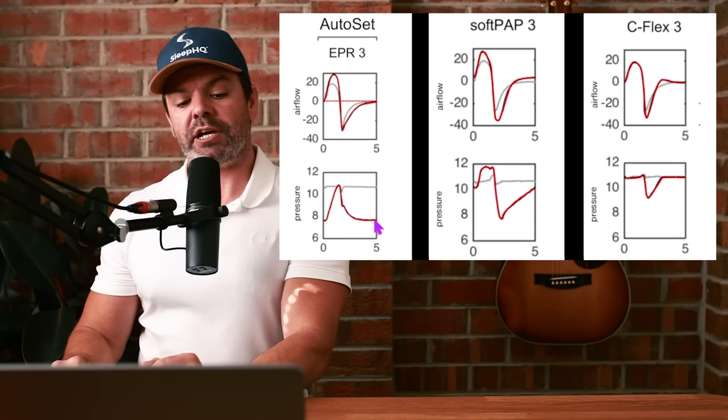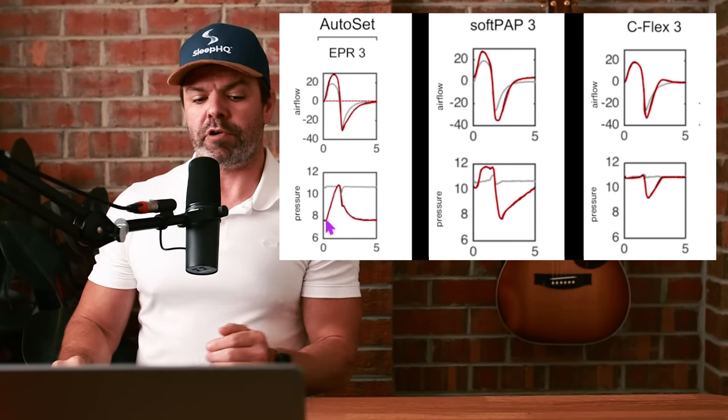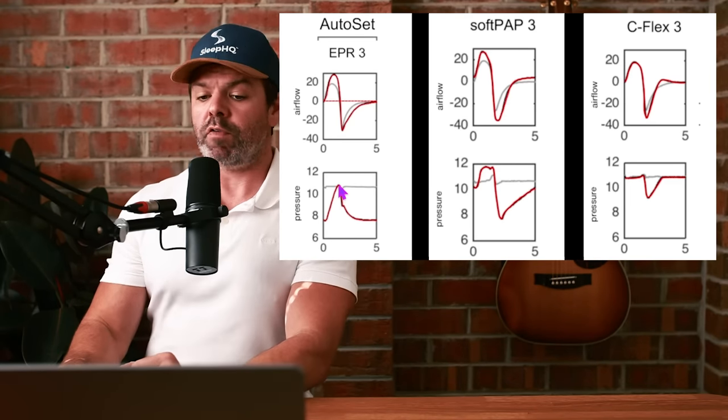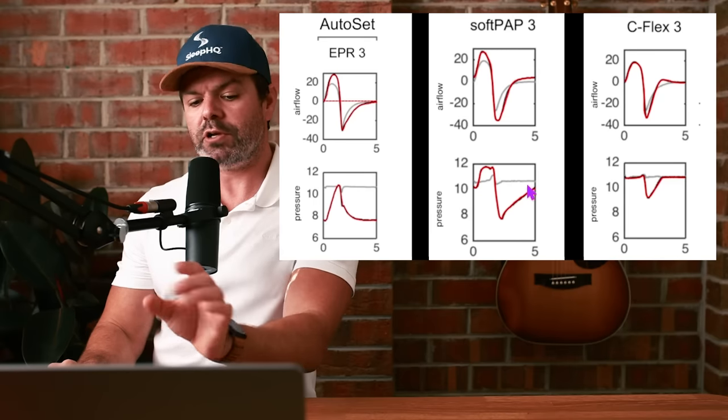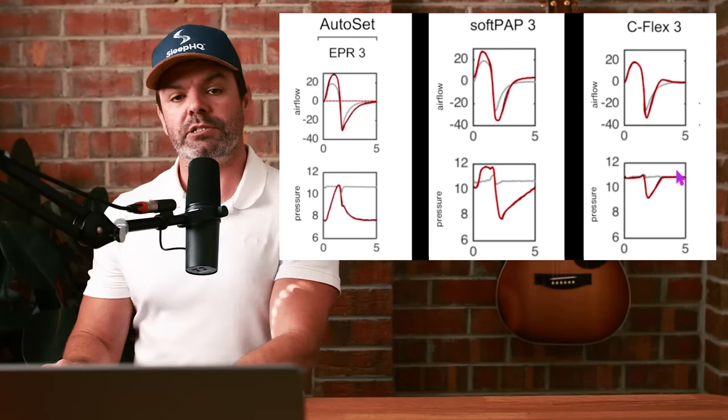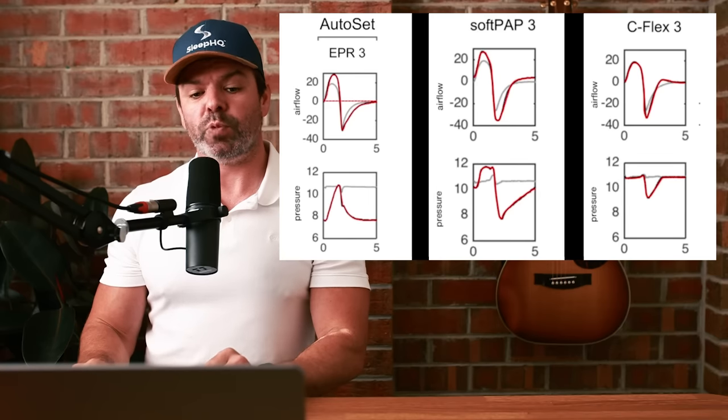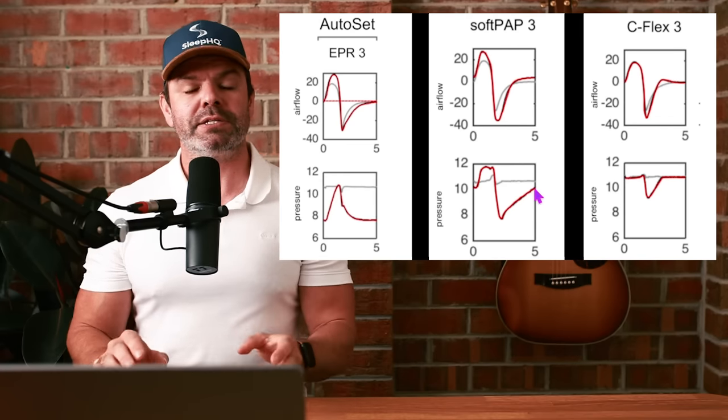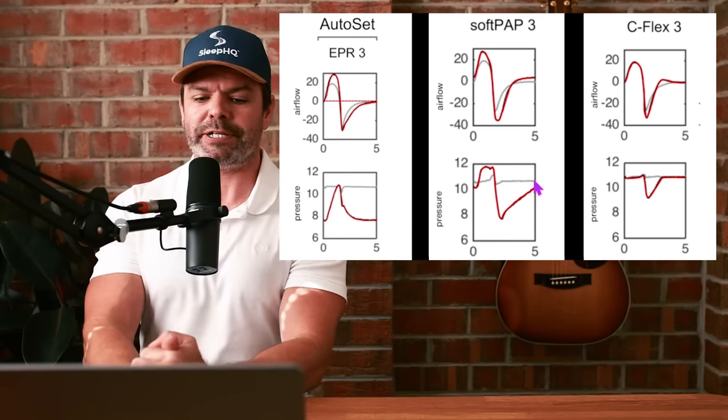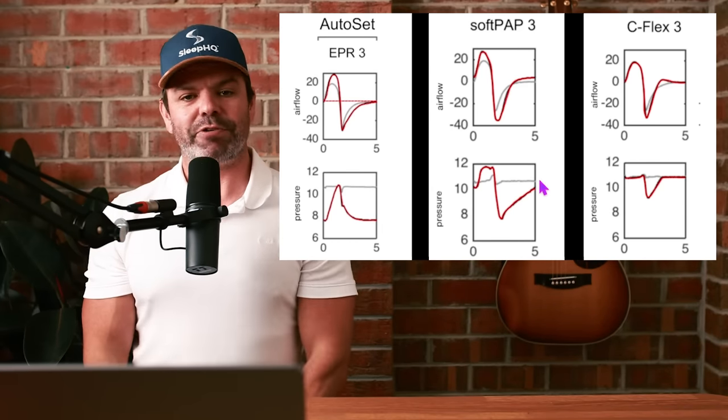That's the problem with the ResMed EPR. You can see it drops down and the pressure doesn't return until after expiration. It rushes straight back up. But with SoftPAP and C-Flex, after the initial drop, the pressure returns to baseline, returns to the optimal levels prior to inspiration. As such, that EPAP, that expiratory positive airway pressure, it just holds everything open, it stops the initial narrowing. If you wait until after exhalation, it's too late, you've missed the boat. That's why you need to increase the CPAP pressure with ResMed when you use EPR. But with these two you don't, because the pressure has already returned up to baseline prior to the end of expiration. That's the difference right there, that's the secret sauce.